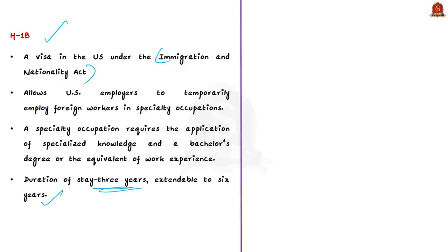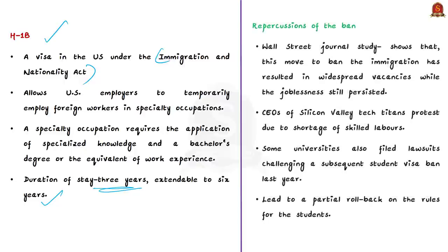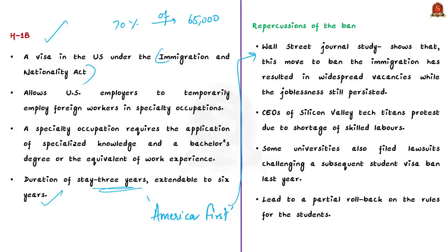The majority of H-1B visa applicants are Indians. According to the editorial, Indians collected approximately 70 percent of the 65,000 H-1B visas annually made available to private sector applicants. Earlier, the visas were suspended under the previous US government's 'America First' agenda under President Trump. However, contrary to expectations, a journal study showed that banning H-1B visas resulted in widespread vacancies in the USA, while joblessness still persisted — indicating a lack of skills among Americans for those jobs.